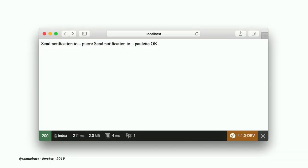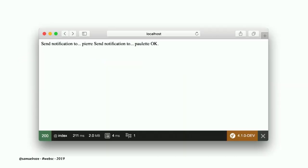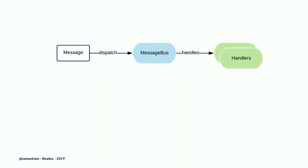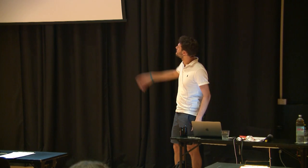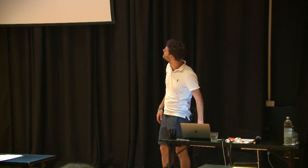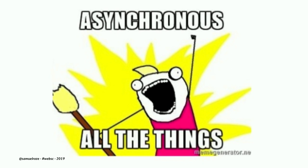Once done, this is what happens when you run the code. The message dispatches to the bus, goes through middleware, the handler is called, and you're done. Now, imagine the handler takes a lot of time — almost a minute. You can decide to make everything asynchronous. You'd configure the message bus to send the message to a transport instead of handling it right now, and then use the worker to get the message and execute it.